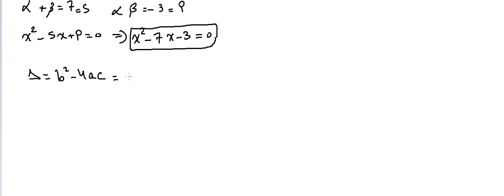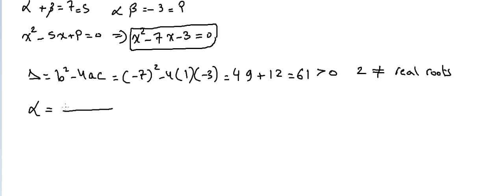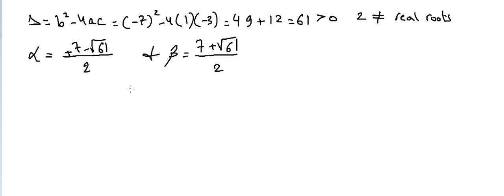With b equals minus seven, a equals one, and c equals minus three: Delta equals minus seven squared minus four times one times minus three, which is forty-nine plus twelve, giving sixty-one. Since Delta is greater than zero we have two distinct real roots. Alpha equals seven minus radical sixty-one over two, and beta equals seven plus radical sixty-one over two.